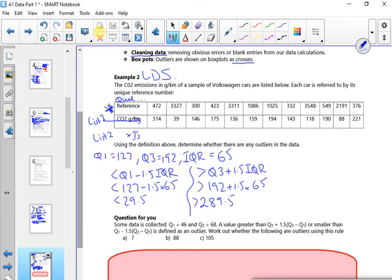So if you look, I thought 39 was going to be the one. But it isn't, is it? It's the 314. So if you look at the data, 39 is all right, so it's not below the 29.5. So 314 is bigger than 289.5. So that's an outlier.